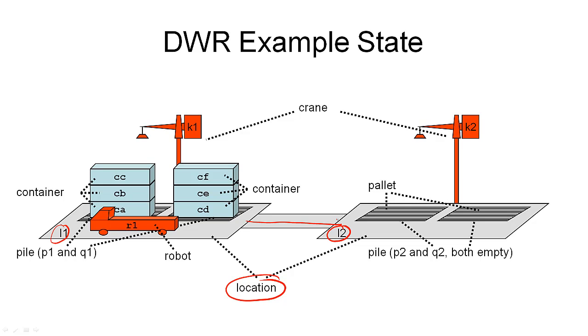At each location, we have cranes which can be used to move the containers around. They can move the containers between the different piles that are available. Here, at this location L2, we see there are two piles, P2 and Q2. In this case, they are both empty. There is no containers on these piles. But at the bottom of every pile, we will always have a pallet onto which we can stack the container. The pallet tells us where the bottom of the pile is.